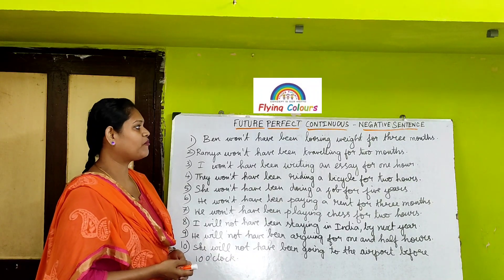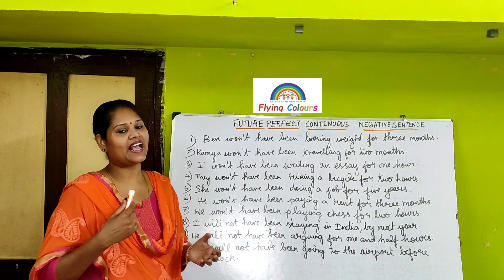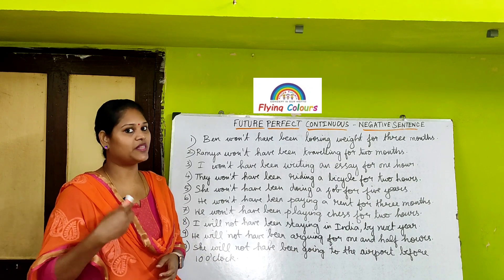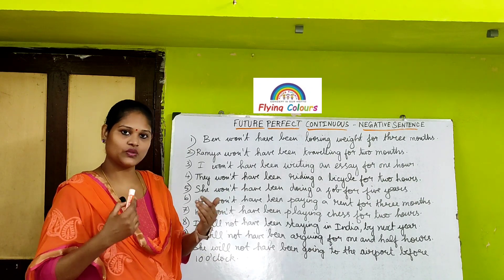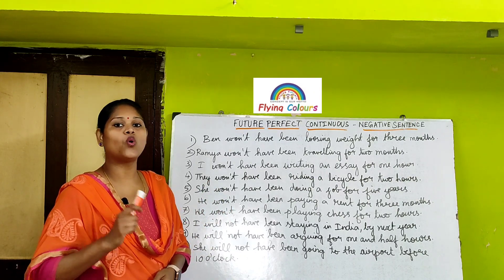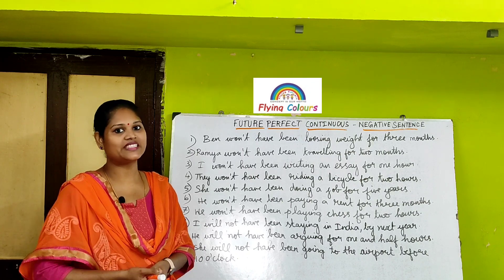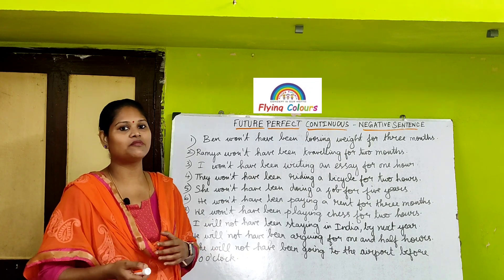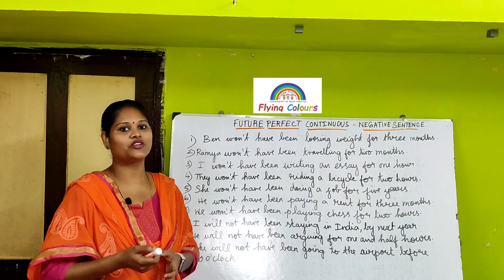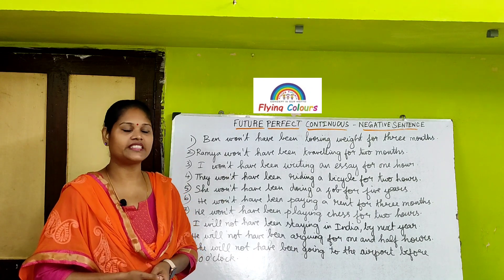Ben won't have been losing weight for three months. This sentence tells that Ben has started losing his weight from the past and he is losing in the present too. But in future, Ben won't have been losing his weight for a duration of three months.